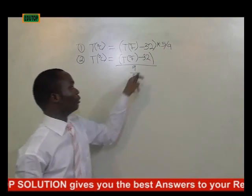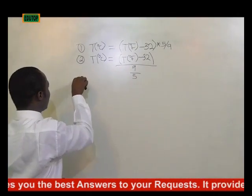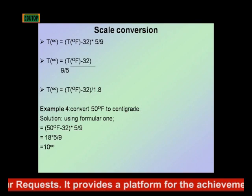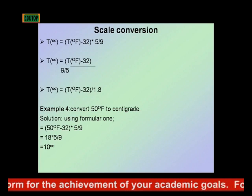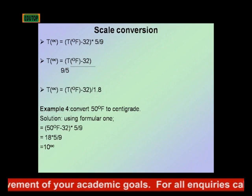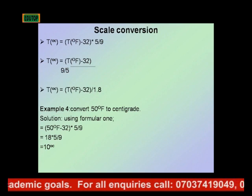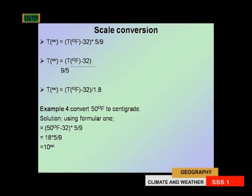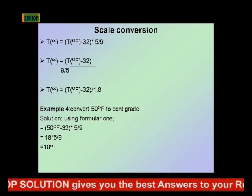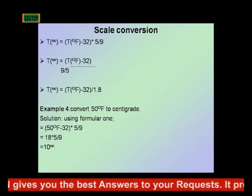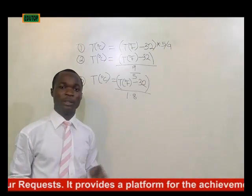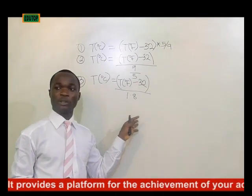In formula 1, 5 was on top, but now it is at the bottom. For formula 3: Temperature in degrees Celsius equals temperature in degrees Fahrenheit minus 32, divided by 1.8. We will see the relationship of the value 1.8 as we progress. These are the 3 possible formulas we can use in converting from one temperature scale to the other.